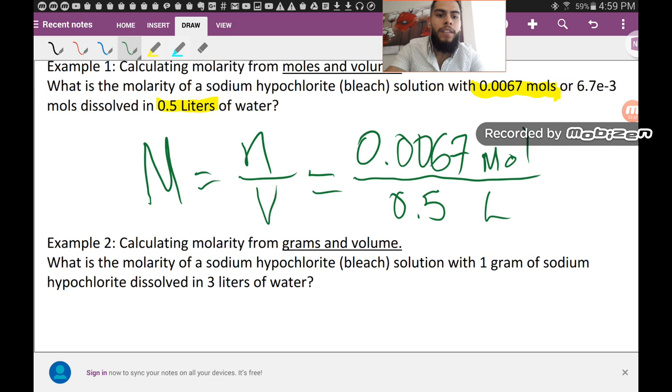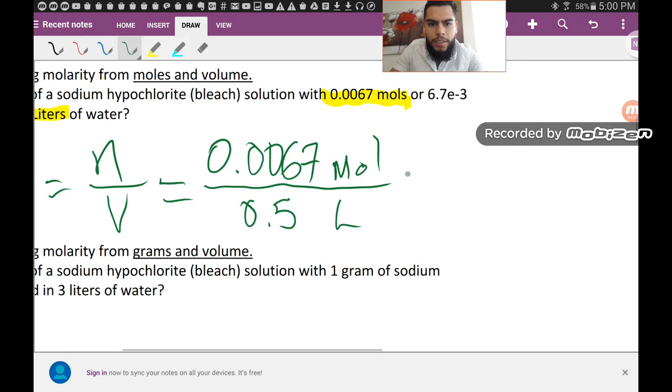Whenever you do that math, you obtain a calculator. You can do it on your phone. You should be doing this on your phone as well. 0.0067 divided by 0.5 is roughly 0.0134.